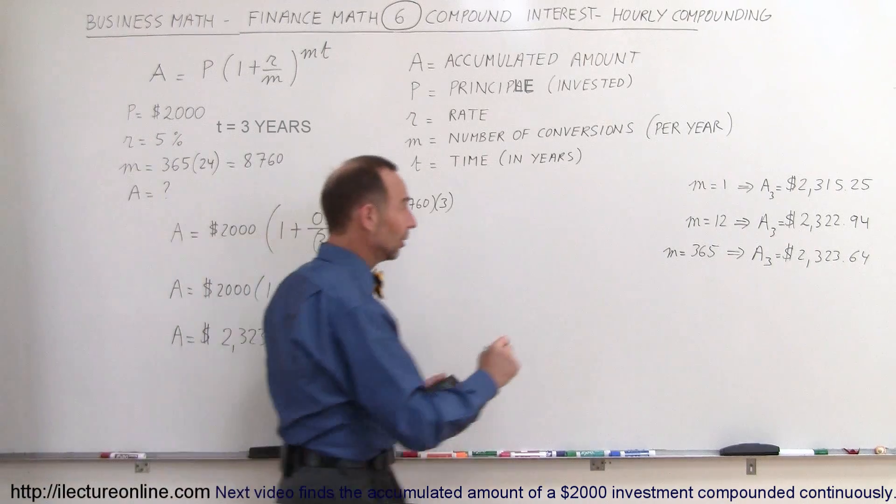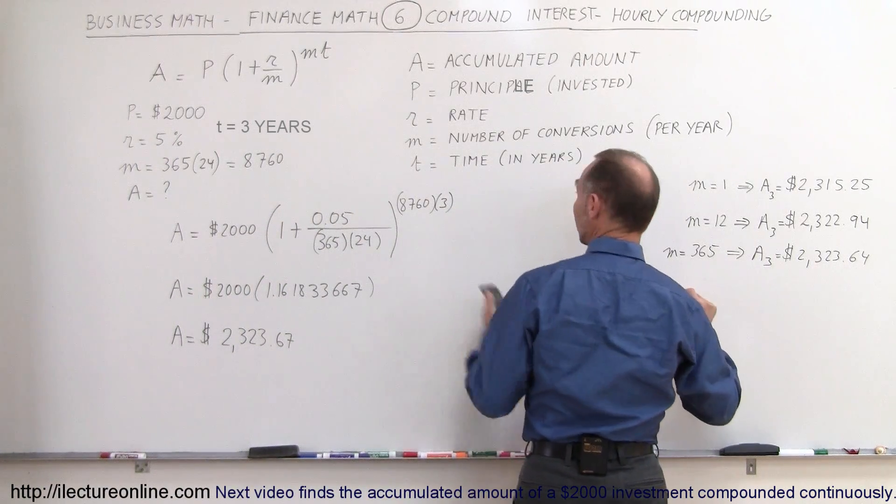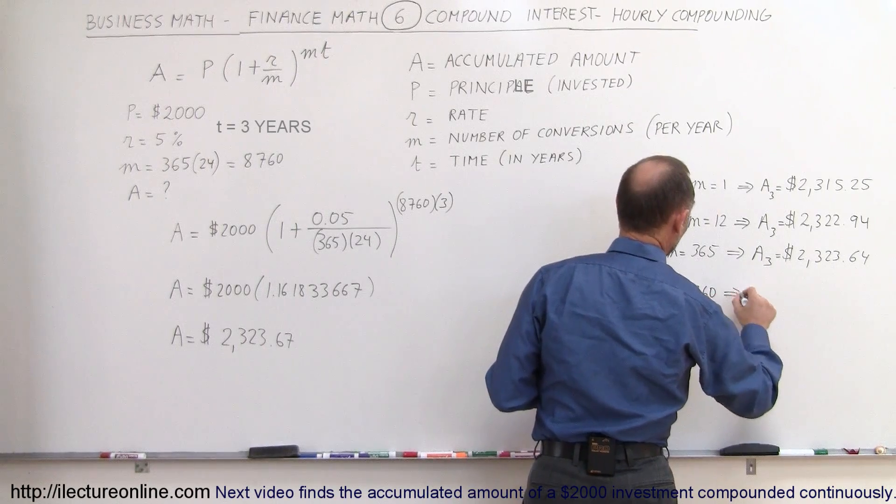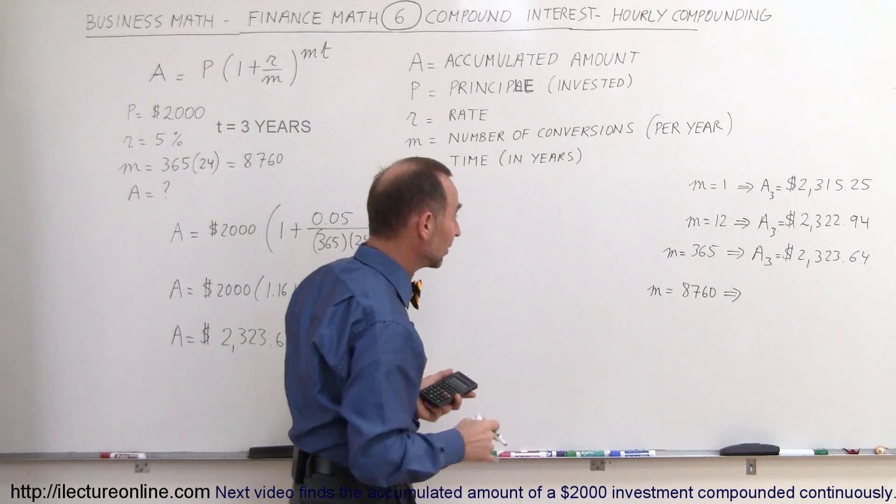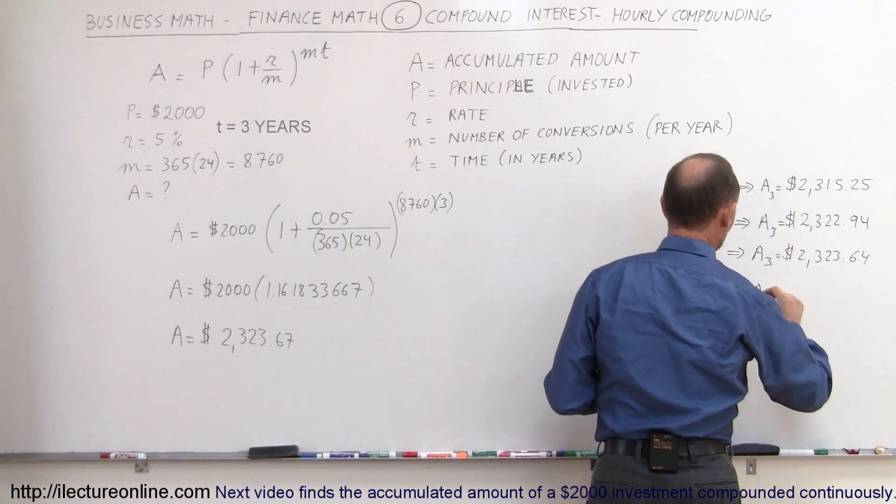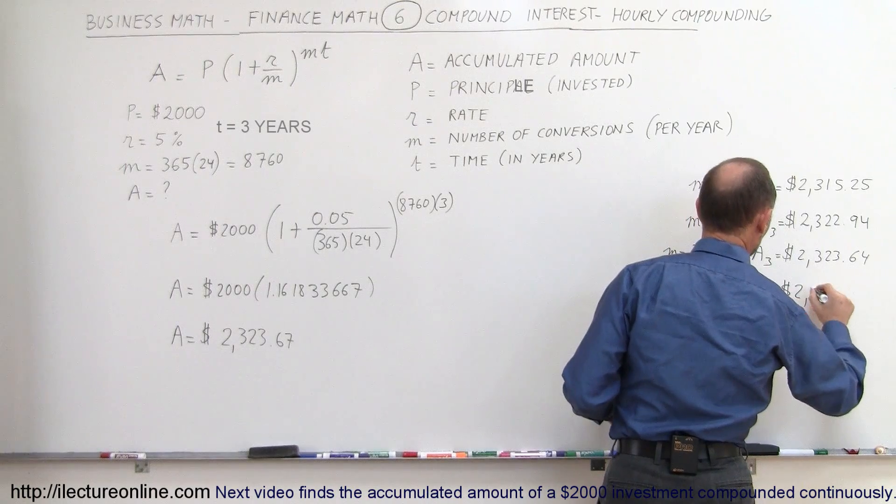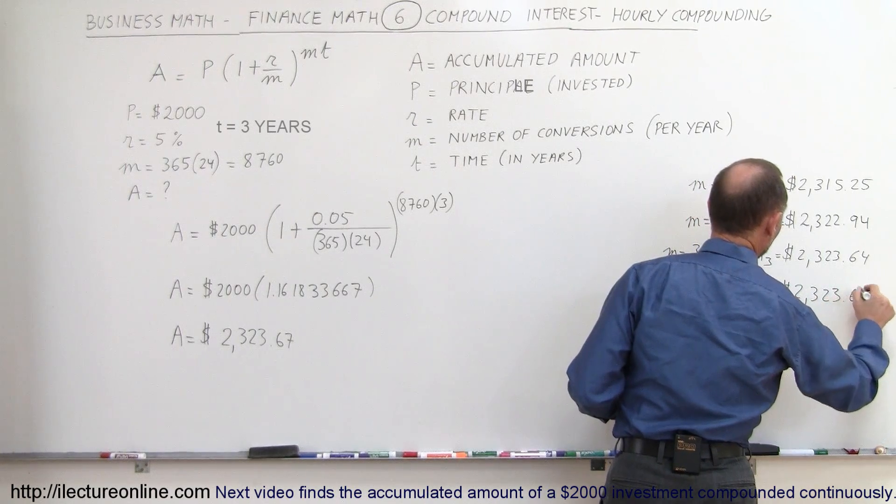Now let's compare that. M is now 8,760, that means we calculate the interest every hour and add it to the amount invested. After 3 years it equals $2,323.67.